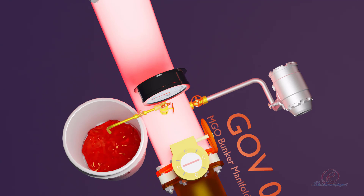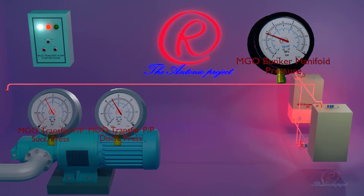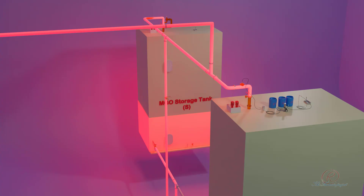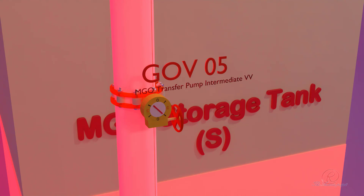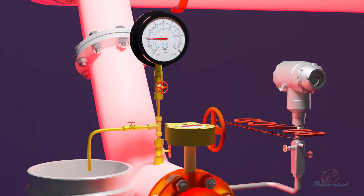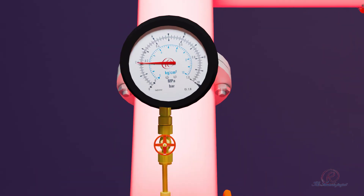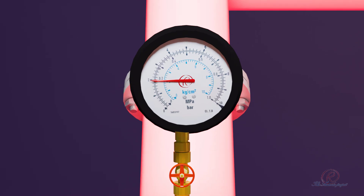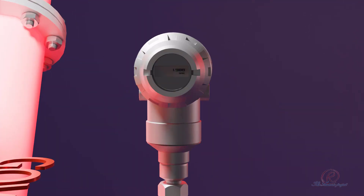Carefully monitor discharging pressure and regularly check joints, flanges, and dresser fittings for any leakage. Allocate enough personnel to carry out regular patrols during filling of the bunker pipeline. After stopping the MGO transfer pump, close GOV-05 MGO transfer pump intermediate valve to isolate pressure on the bunker piping line. Check the bunker manifold pressure; currently it reads 2 bar on the analog pressure gauge and 1.98 bar on the digital pressure transmitter.